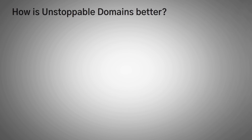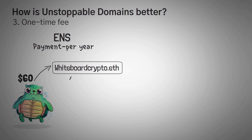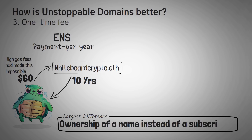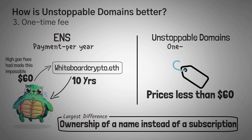Another way Unstoppable Domains seems to be better than ENS is because they only charge a one-time fee, while ENS is based on payment per year. For whiteboardcrypto.eth on ENS, I paid around $60 to lock in 10 years. I personally think the largest difference here is the difference between ownership of a name instead of a subscription to a name. Unstoppable Domains have prices less than $60, and you'll never have to worry about forgetting to renew your address.